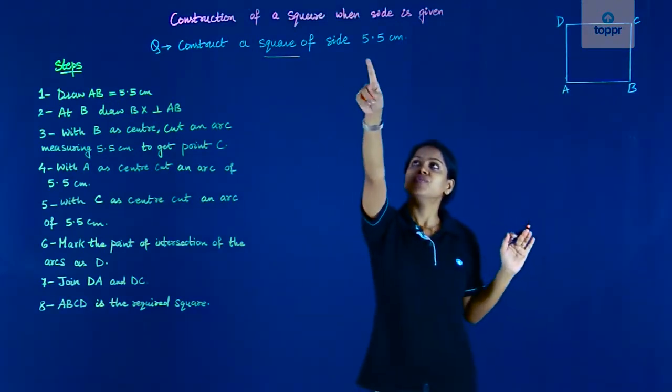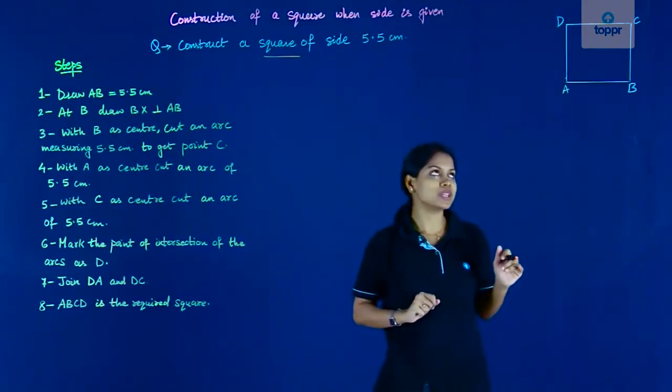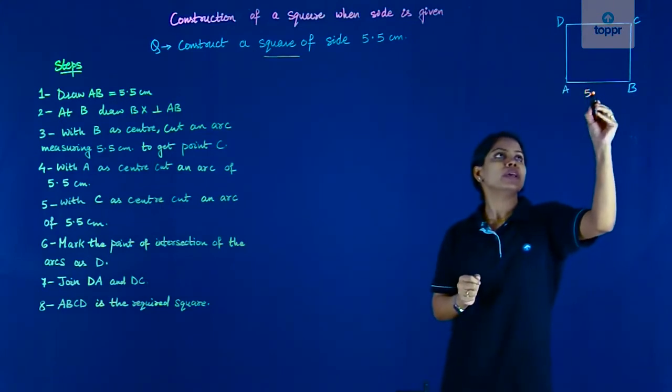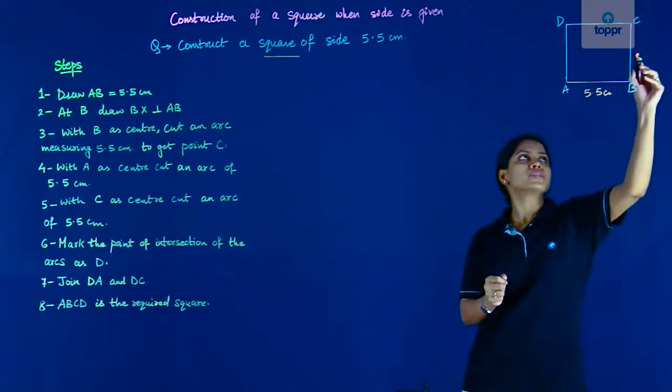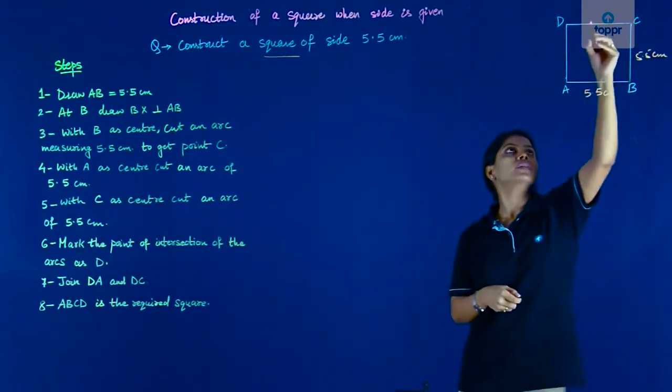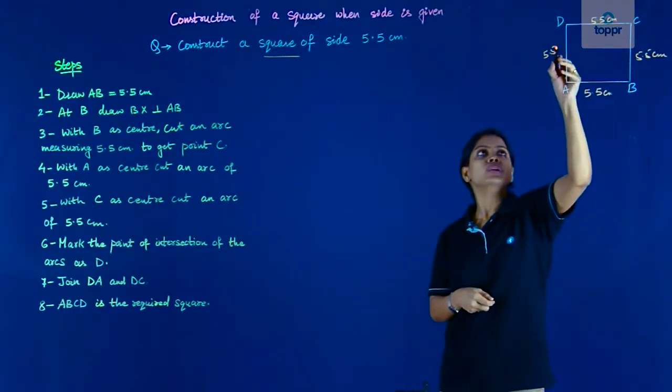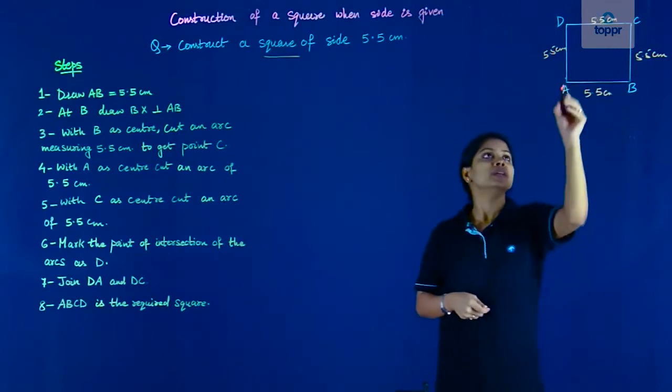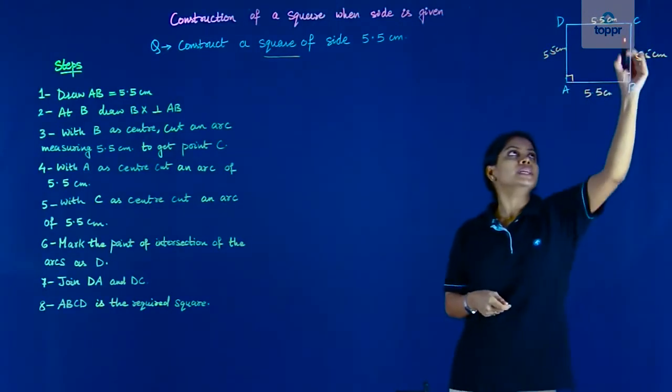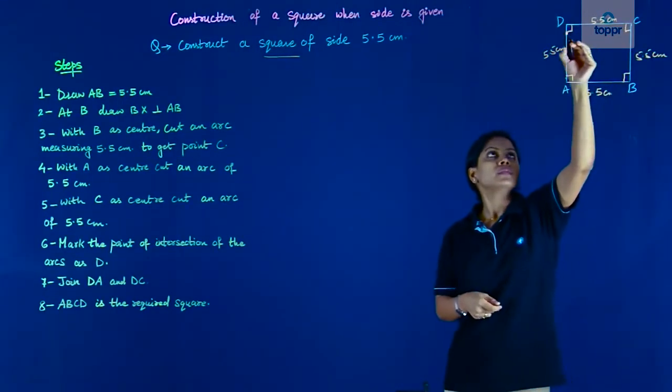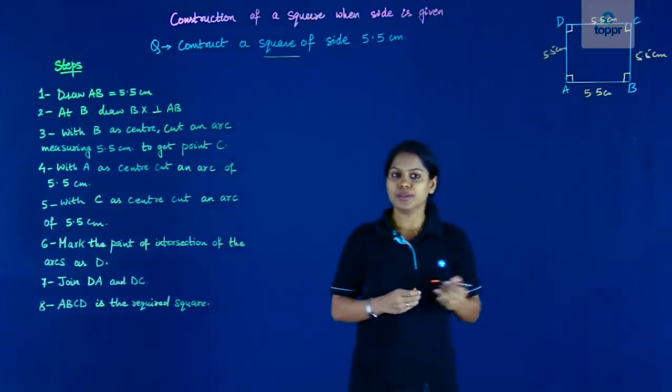Now the question says the side measure is 5.5 centimeters. That means each of the sides measures 5.5 because all sides of a square are equal to each other. Apart from that, each angle is 90 degrees. Now it becomes very simple, isn't it?